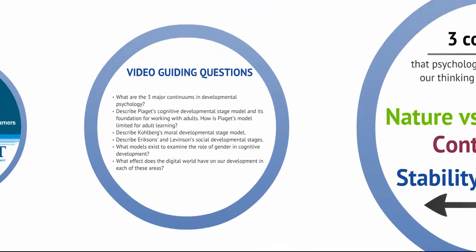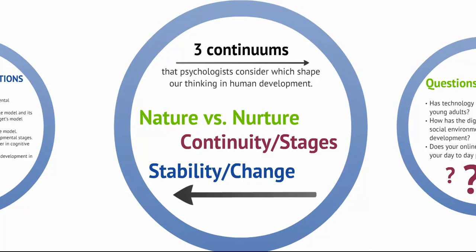Adult developmental theory is a broad topic with many frameworks and models, which provides us with many implications that can be used to make some assumptions about learning in adulthood. In general, there are three big ideas, or continua, that psychologists consider which shape our thinking in human development. The first is nature versus nurture.